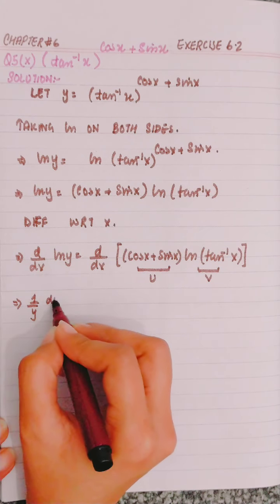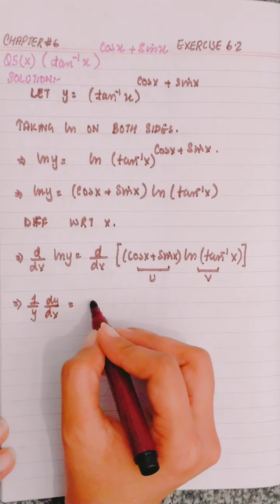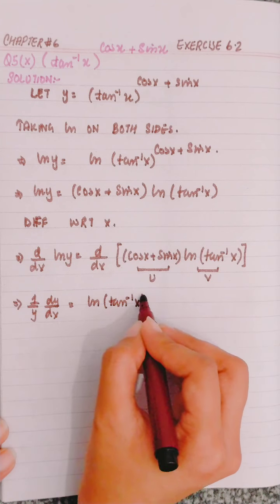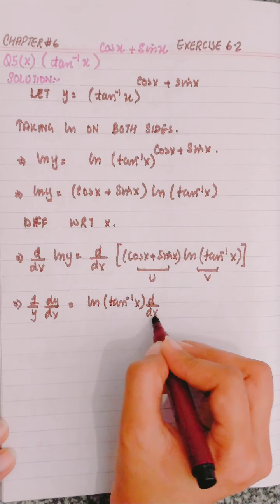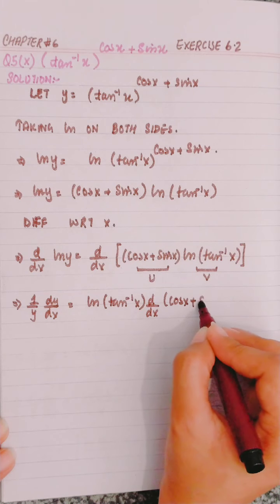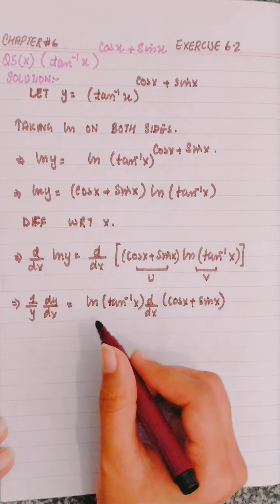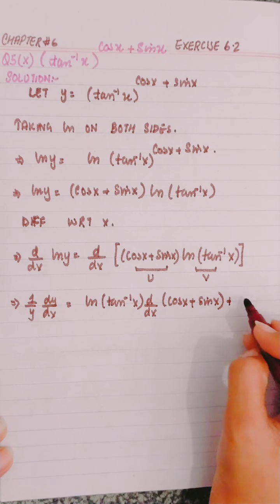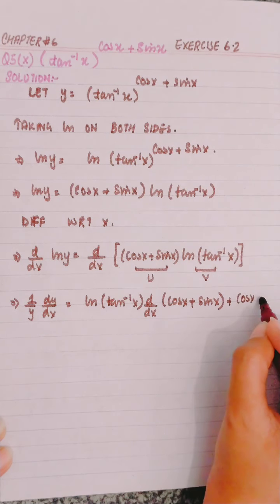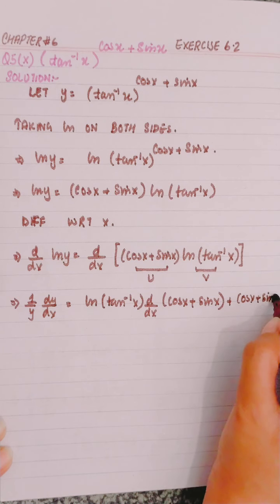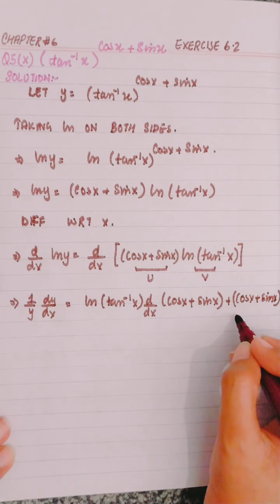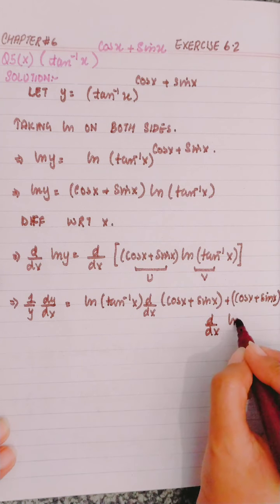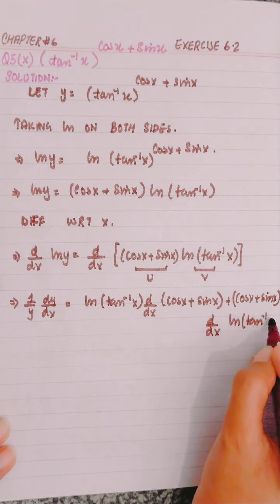1 over y dy by dx is equal to ln of tangent inverse x times the derivative of cos x plus sin x, plus u — which is cos x plus sin x — times the derivative of v, that is ln of tangent inverse x.